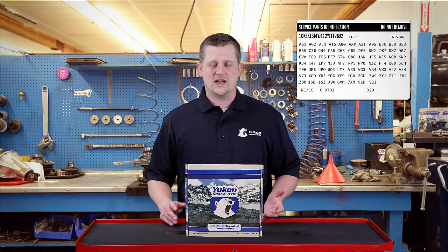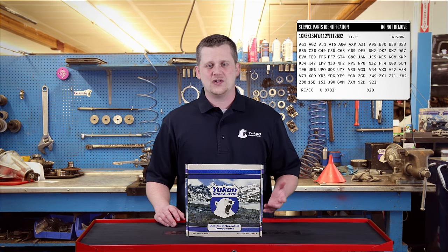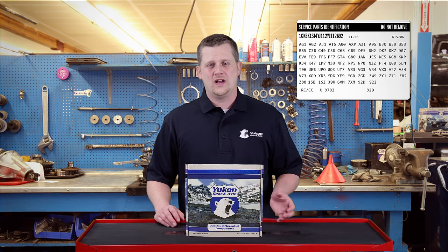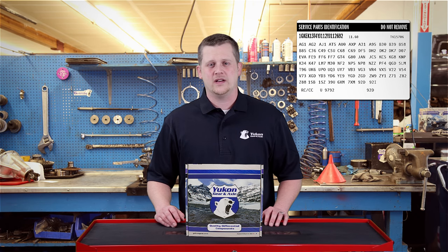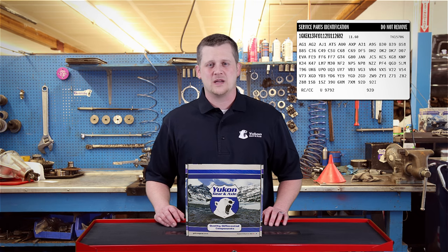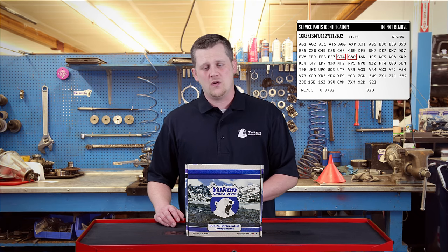All of the codes are alphabetized. When it comes to the differentials, you're looking for G as in golf, a letter and a number. So for example, if you've got a Chevy half-ton with a 3.73 gear ratio and a factory posi, it's going to be a GT4 and a G80 code.